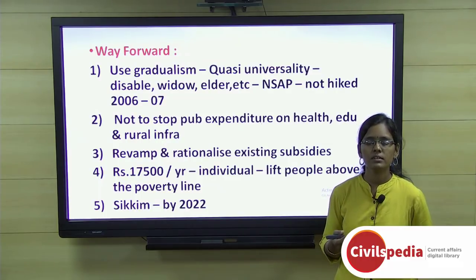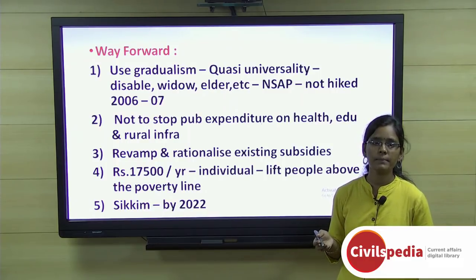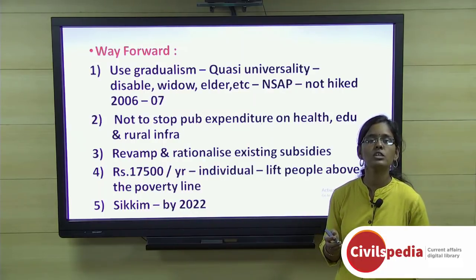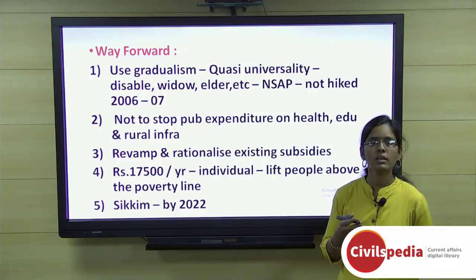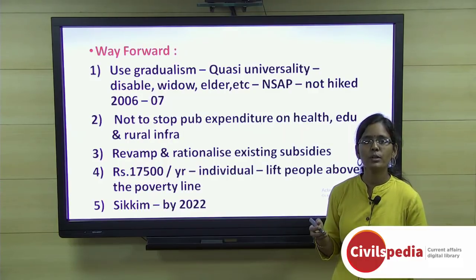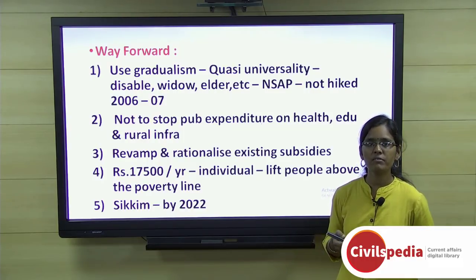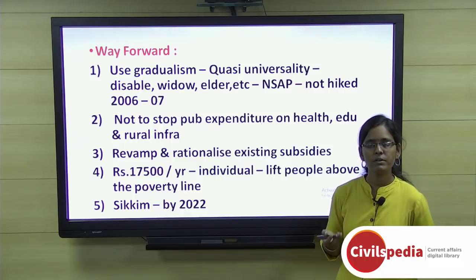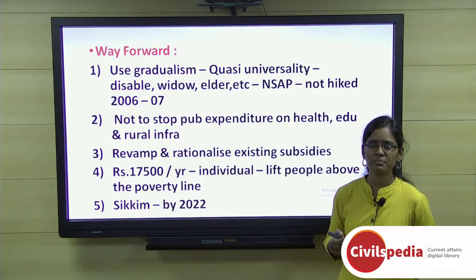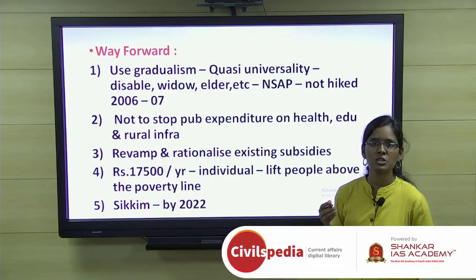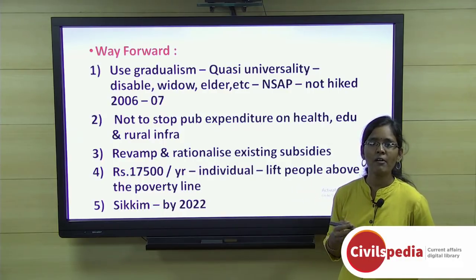As way forward, a gradualist approach of quasi-universality is recommended — not giving UBI to the entire population at once, but phase by phase: first to disabled people, then widows, then elderly, and progressively including everyone. Alternatively, strengthening the National Social Assistance Program (NSAP) is important, as pension amounts for disabled, widowed, and elderly people have not been increased since 2006-07, reflecting neglect of similar income support programs.